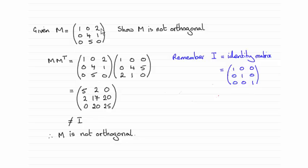Remember if you have this top row 1 0 2, you write it as a column. And then the middle row 0 4 1 becomes the middle column, and the last row becomes the last column. So hopefully you should be able to see your way through that one.